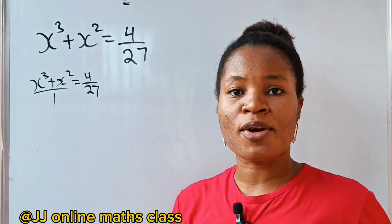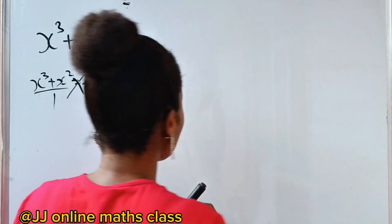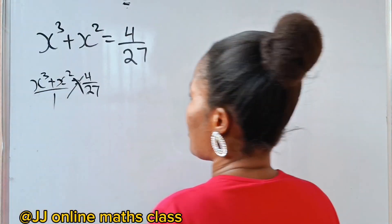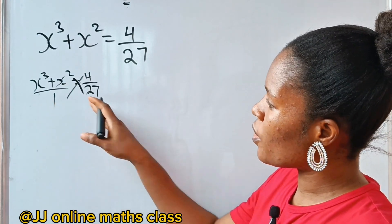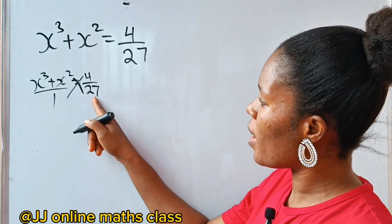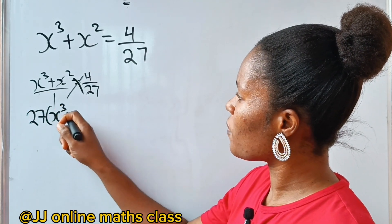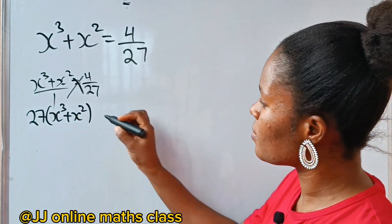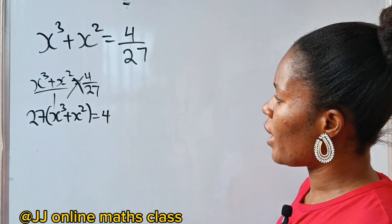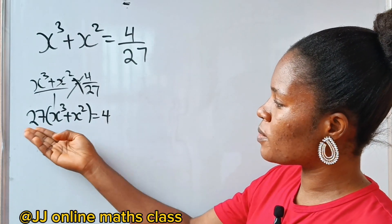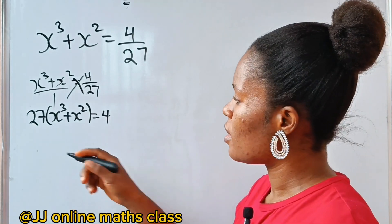Now let's cross multiply. If we cross multiply, we'll have 27 multiplied by x cubed plus x squared, which is equal to 4 multiplied by 1, giving us 4.